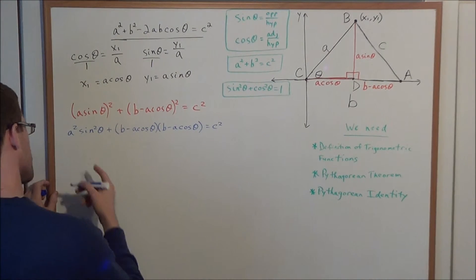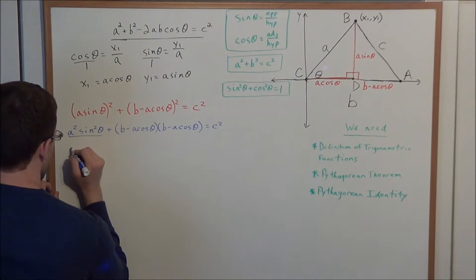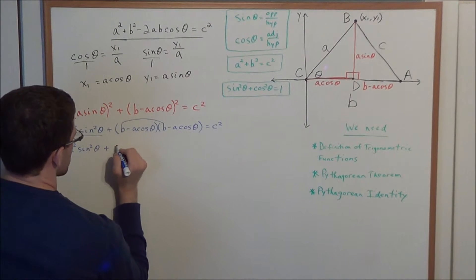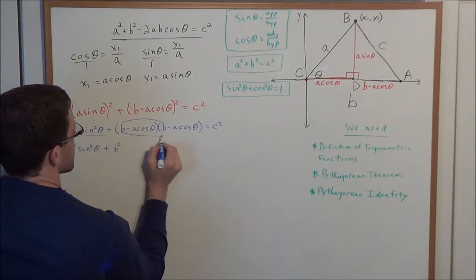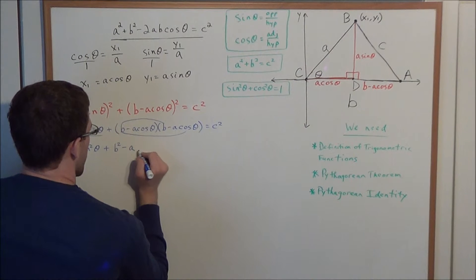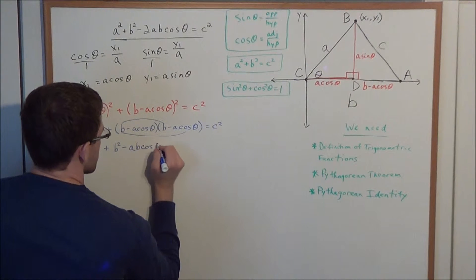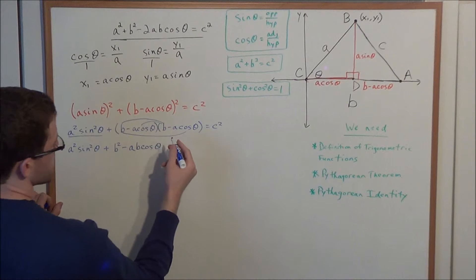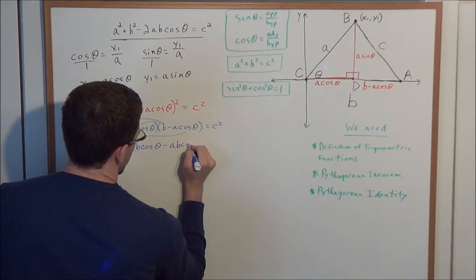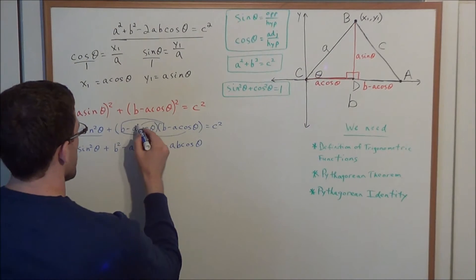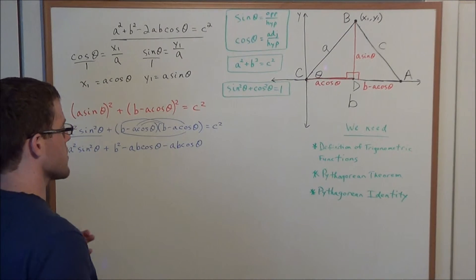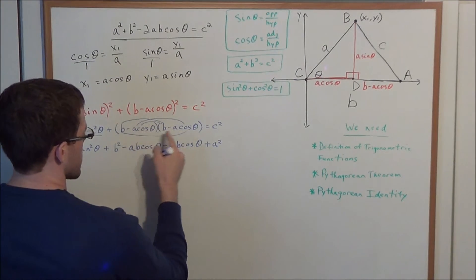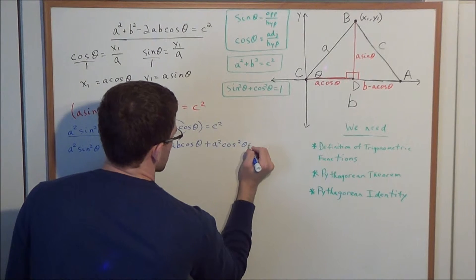Now we need to expand this left-hand side. We have a squared sine squared theta, because a sine theta times a sine theta gives a squared sine squared theta. Plus, we write b minus a cosine theta times b minus a cosine theta equals c squared. Expanding: b times b is b squared; b times minus a cosine theta is minus ab cosine theta; minus a cosine theta times b is minus ab cosine theta again; and minus a cosine theta times minus a cosine theta gives positive a squared cosine squared theta. This is all equal to c squared.